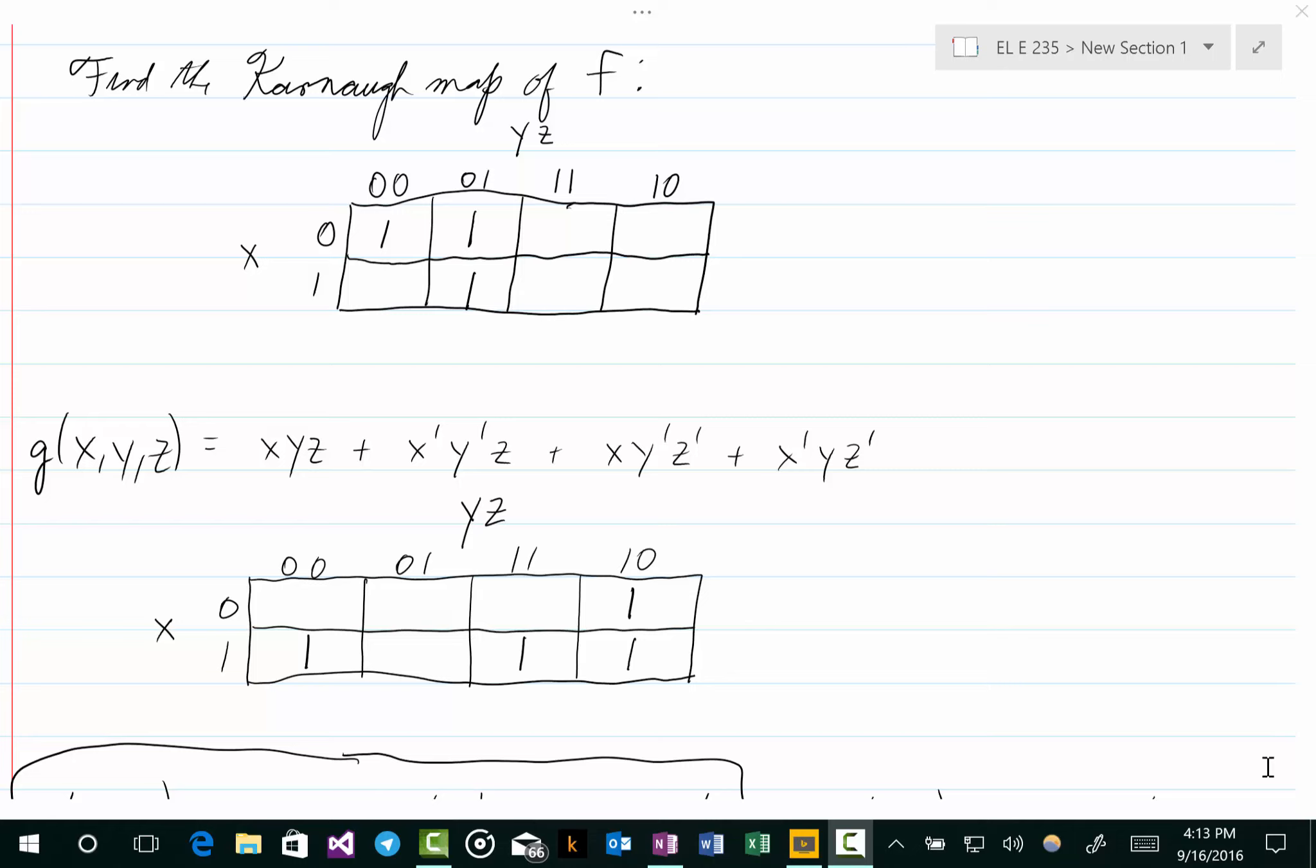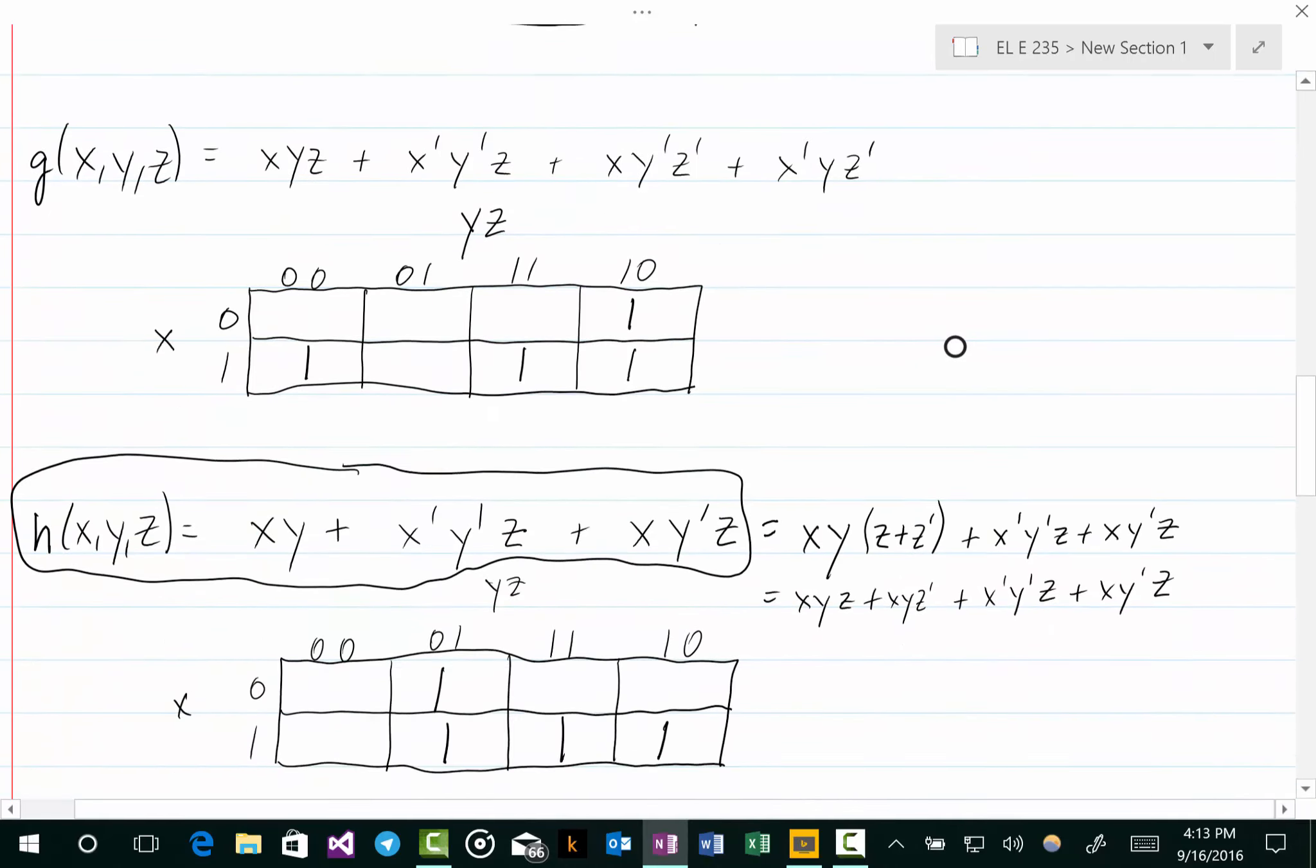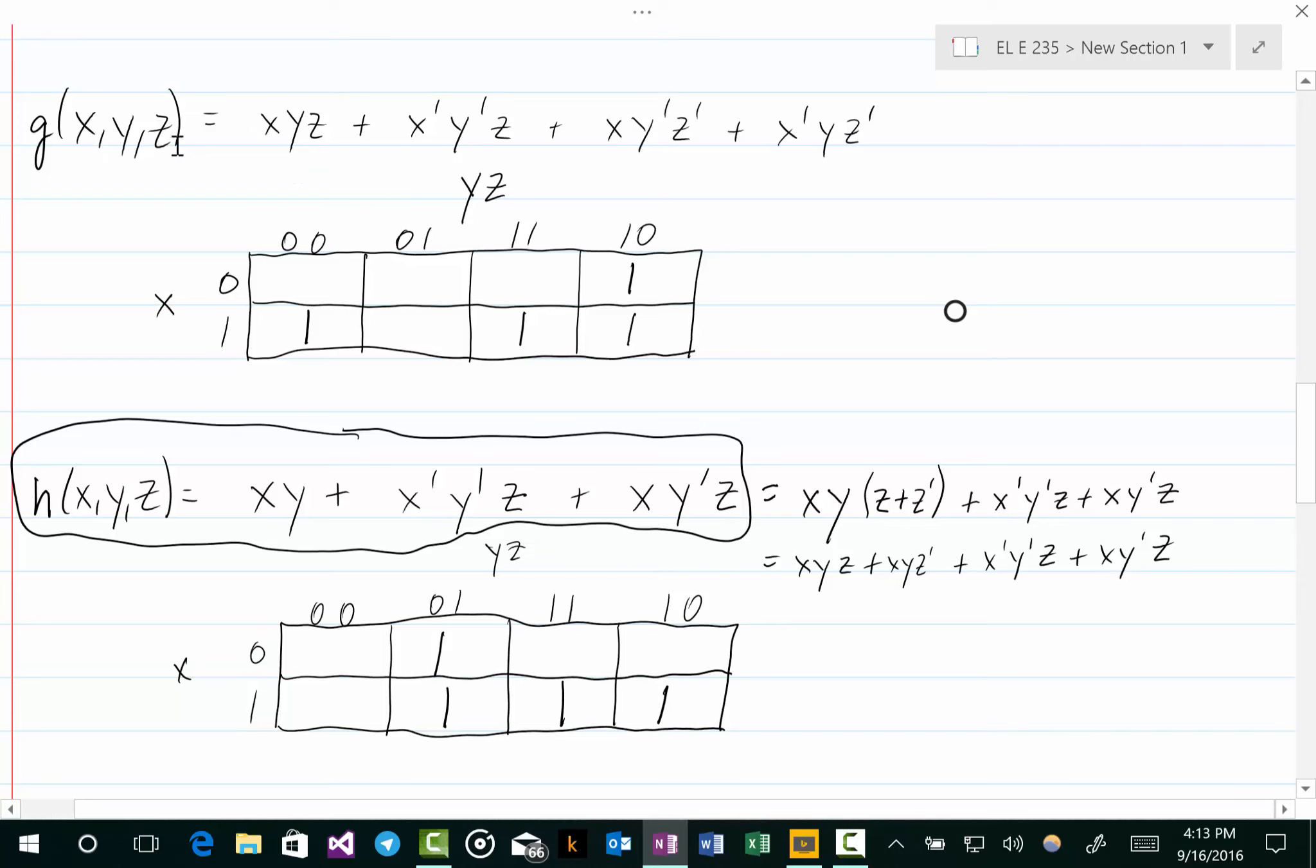So if you'll go to the 27 minute and 47 second mark of lecture 10, you will see a discussion of finding the Karnaugh map for this function g(x,y,z) which is equal to xyz or x'y'z or xy'z' or x'yz', and the Karnaugh map that is in the lecture is right here, but one of those ones is incorrect. One of those ones is in the incorrect spot.